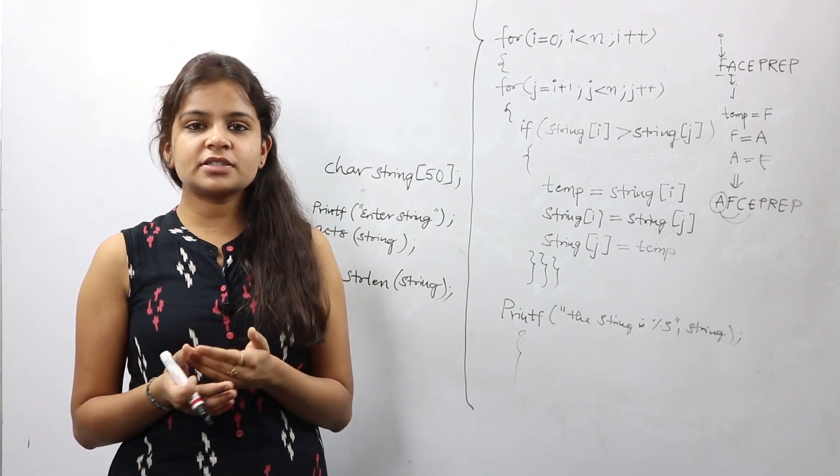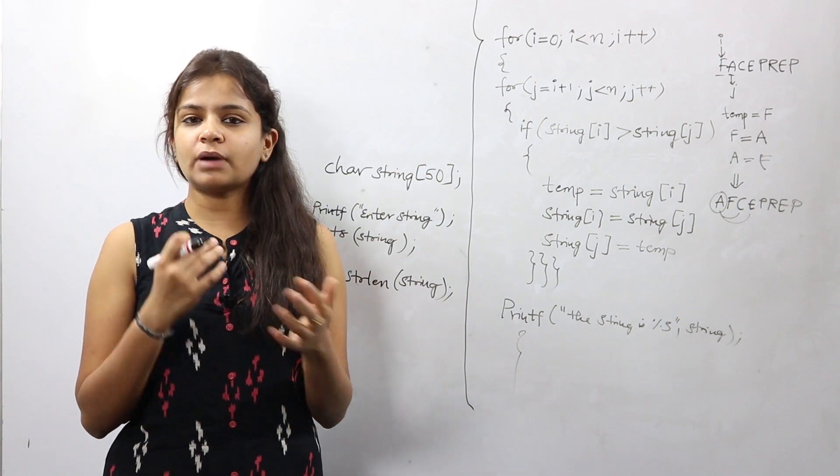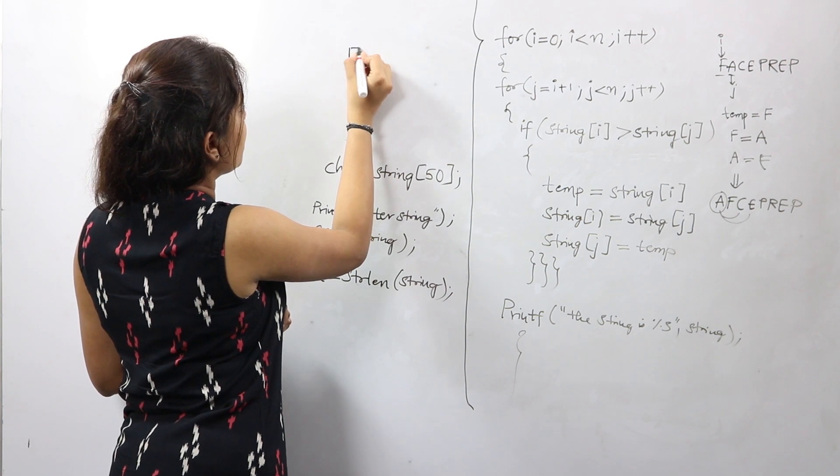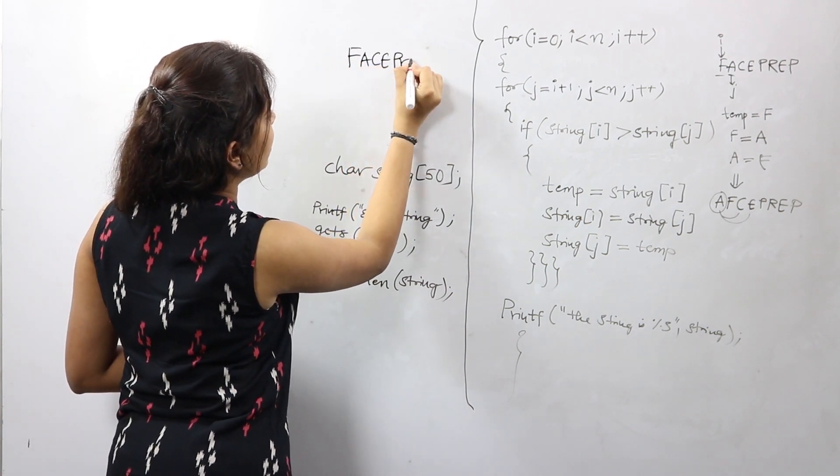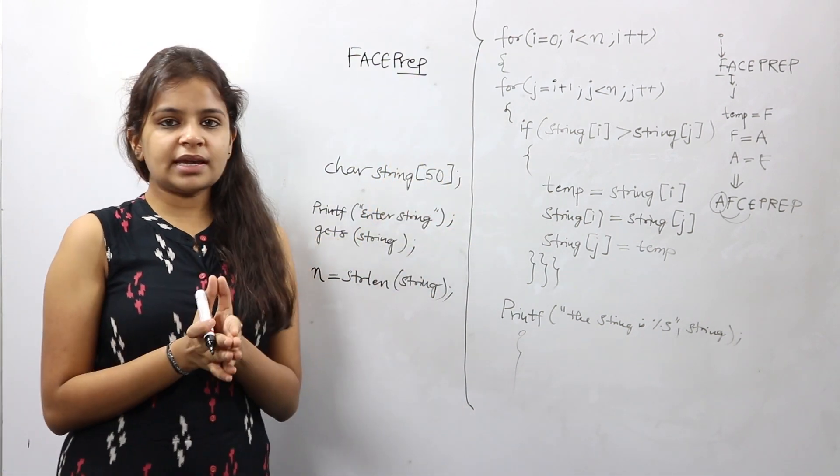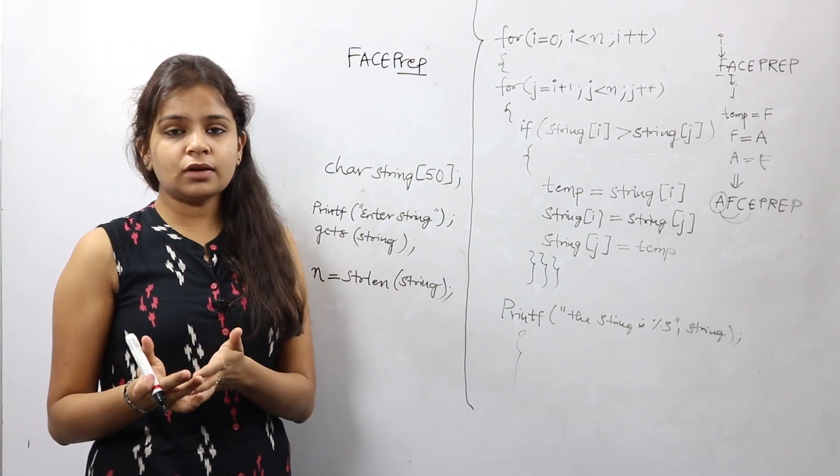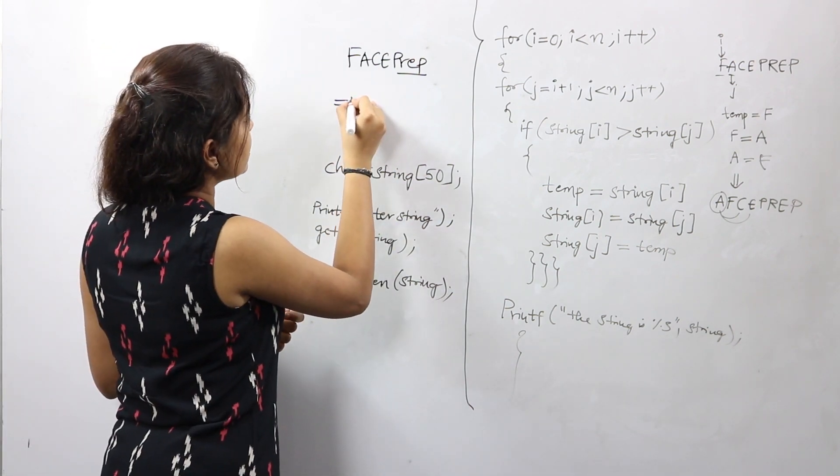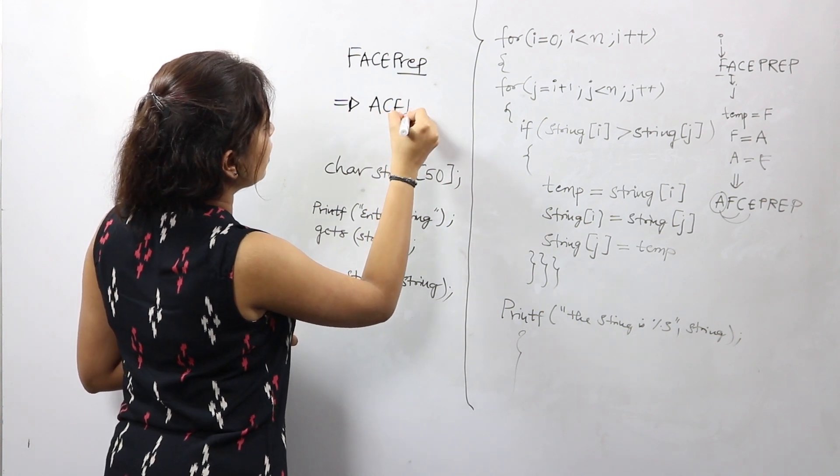One last thing that I would want to discuss with you is, let's say the input that you have is a combination of uppercase and lowercase letters. Something like FACEprep. We have three lowercase letters and the remaining uppercase letters. In such cases, the uppercase letters would get sorted in alphabetical order and get printed first, followed by the lowercase letters. Your output would be A C E F P, e p and r.